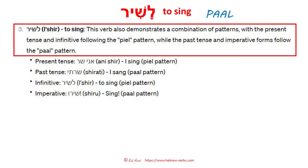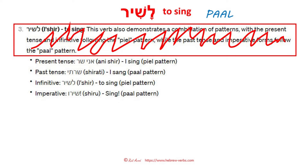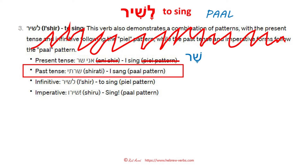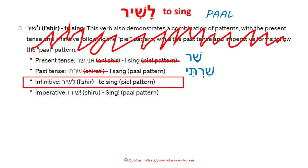This verb also demonstrates a combination of patterns with the present tense and infinitive following the piel pattern — same BS as before, let's just cut it. Present tense: ani shira — not ani schir, it's ani shira — I sing, paal. Past tense: shireti — it says shirati, no, it's shireti, I sang, paal. Infinitive: lashir, not leshir — lashir, to sing, paal, definitely not piel.